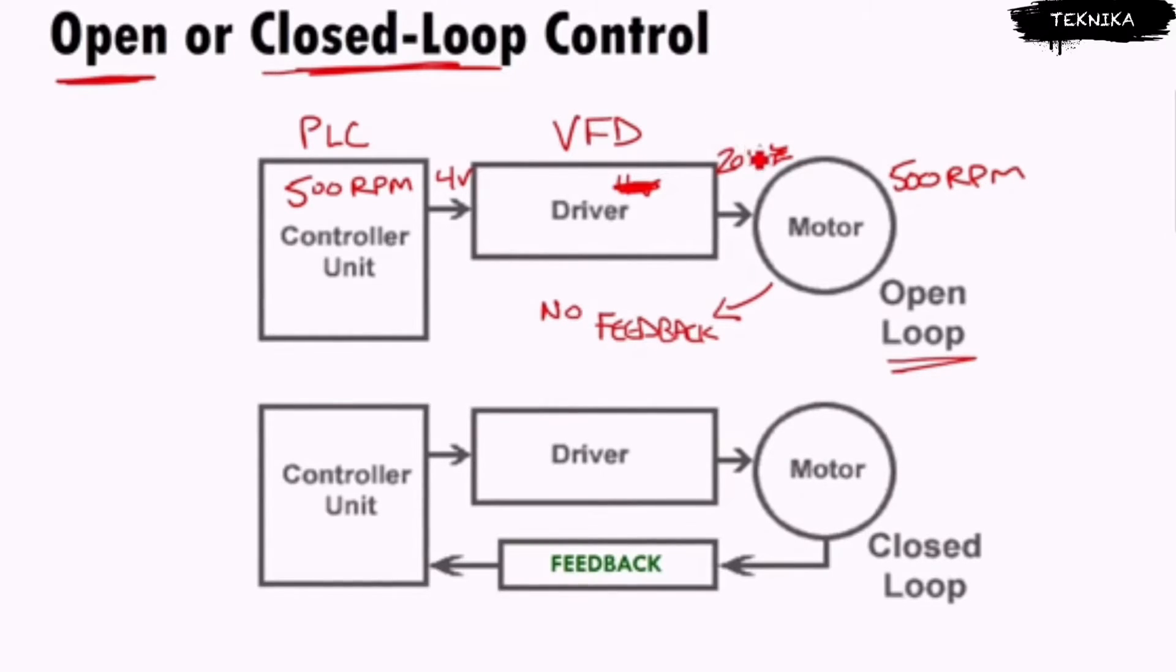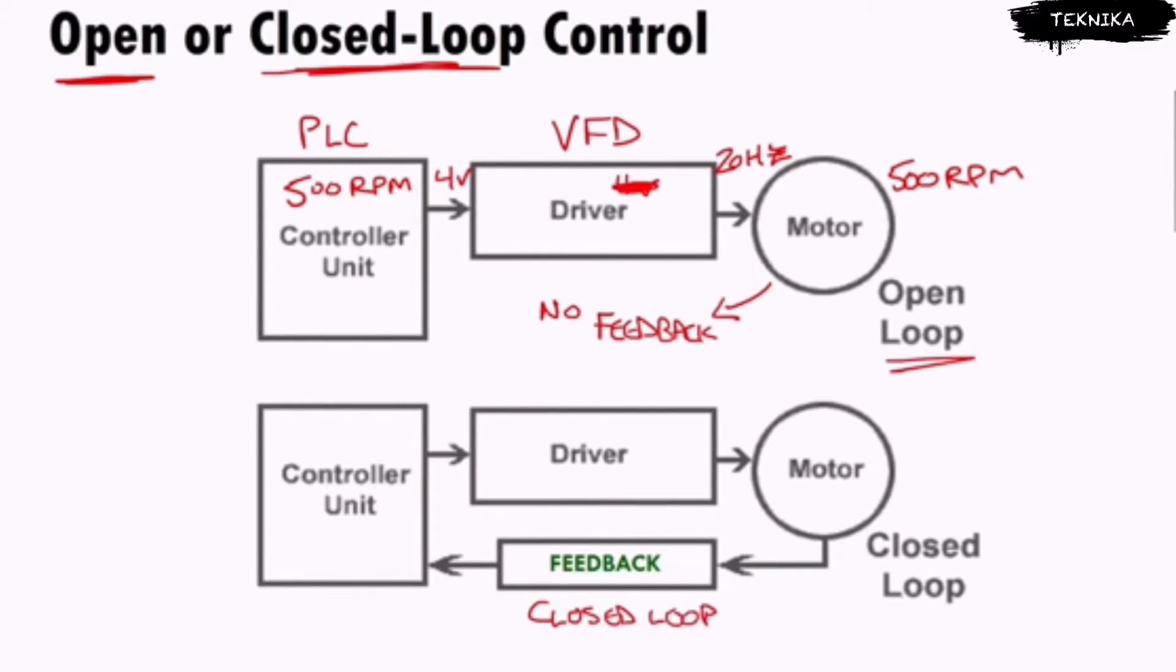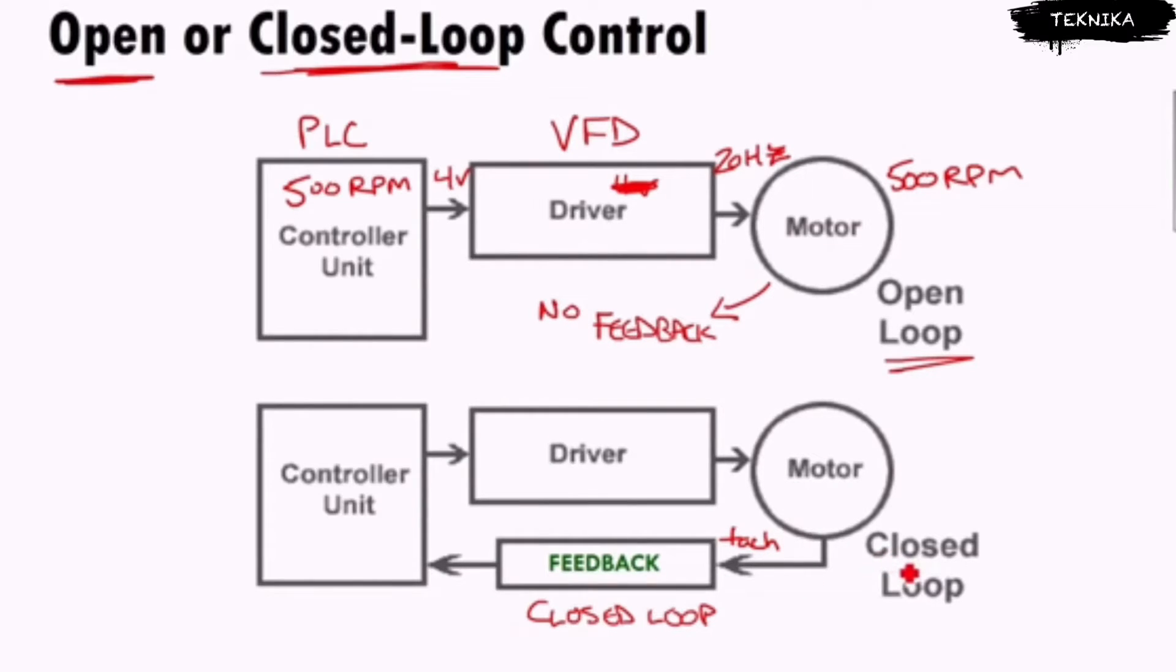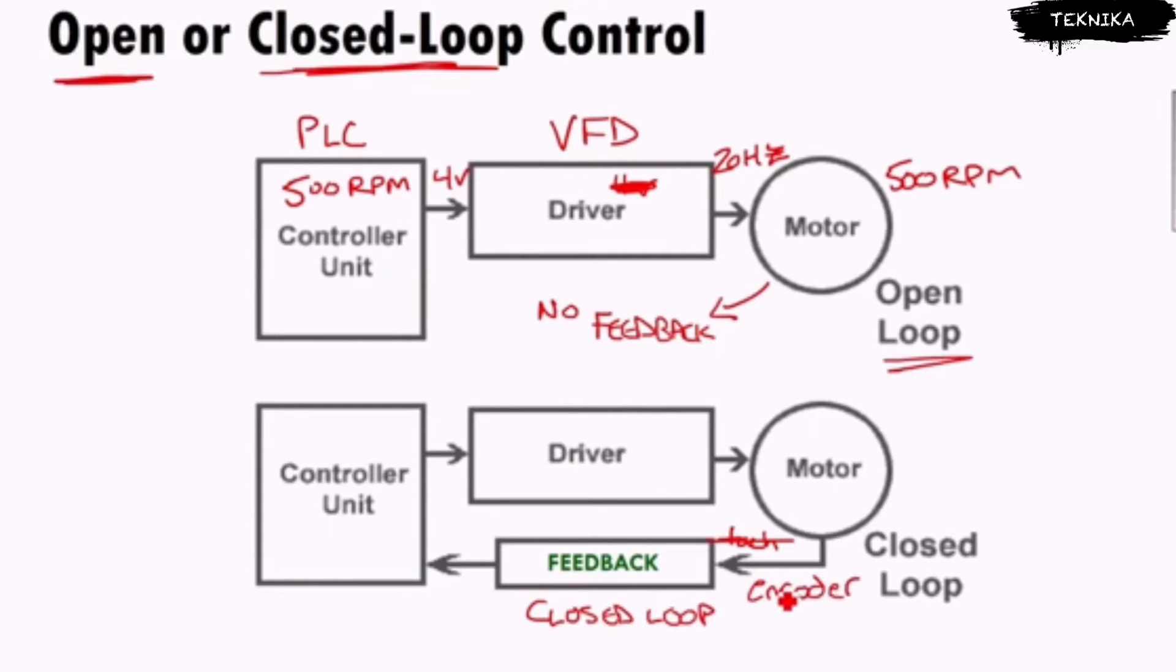On this bottom one down here we've got feedback. This is what we call closed loop. Open loop on the top means no feedback, closed loop on the bottom means we have feedback. As an example, I would have something like a tachometer, or it could be even better - you might have something like an encoder. An encoder is a disc that hooks up to the back of the motor shaft so we can actually track the number of pulses per second and determine the RPM.